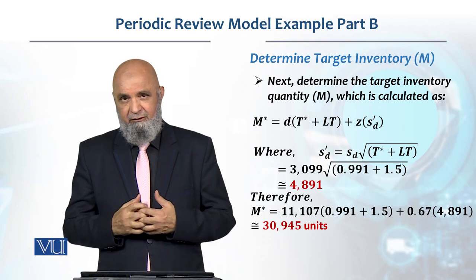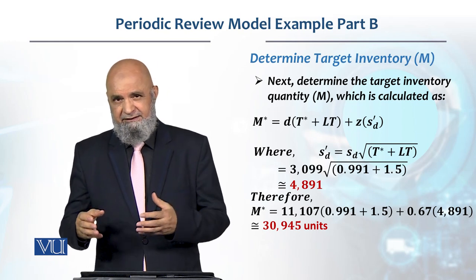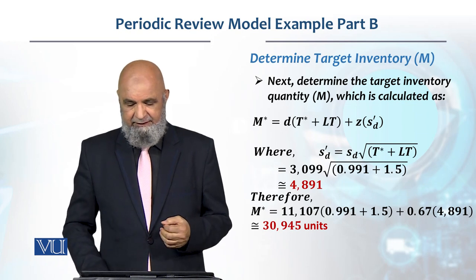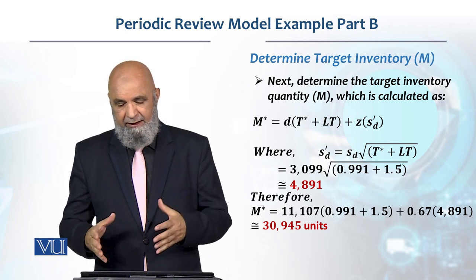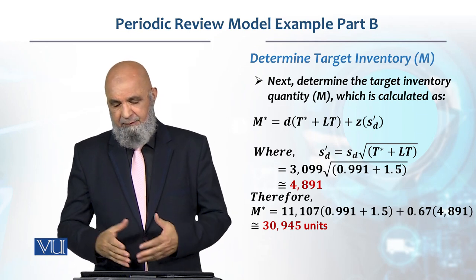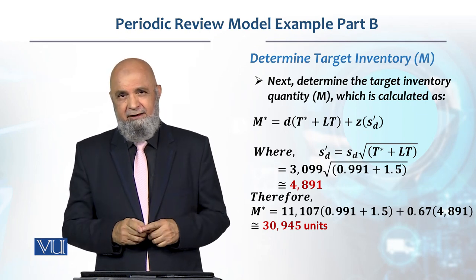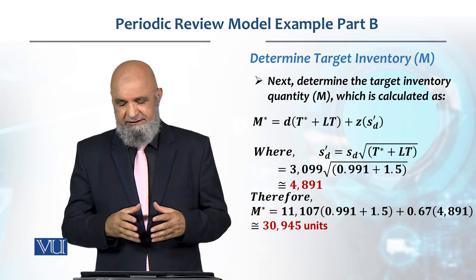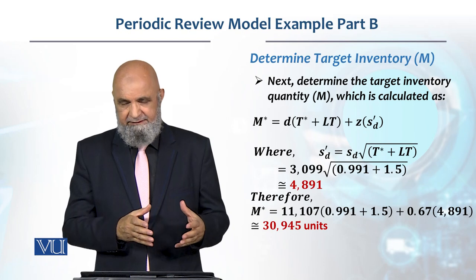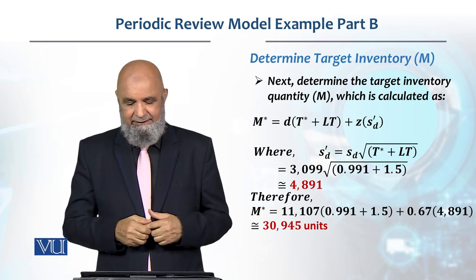We multiply D by (review period + lead time) and sum it to get the value of M. So M equals monthly demand — that is 11,107 — multiplied by (review period + lead time), plus 4,891 multiplied by z. The z-value in this case is 0.67, because from the standard normal table, against a probability of 0.75, the z-value is 0.67. Multiplying this gives the safety stock plus cycle inventory, so the total maximum inventory level — our target M — is 30,945 units.